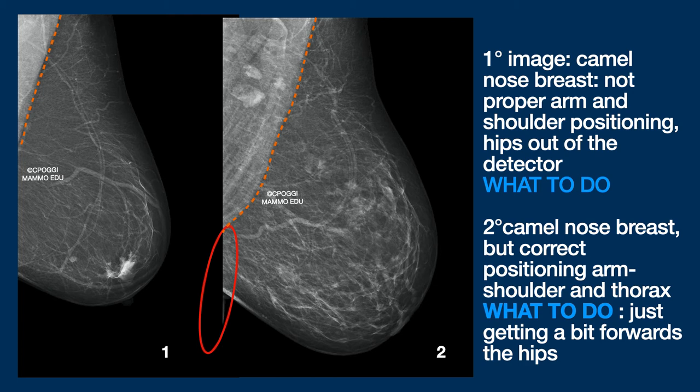Posture correction two: the patient's hips must be rotated in the lateral direction — that is to say, towards the detector — to recover the deep medial tissues that are missing.